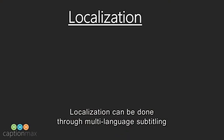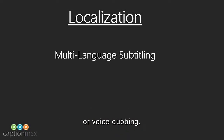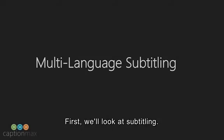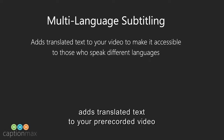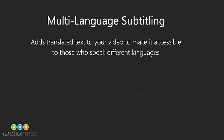Localization can be done through multi-language subtitling or voice dubbing. Let's take a look at a few examples of each. First, we'll look at subtitling. Multi-language subtitling adds translated text to your pre-recorded video to make it accessible to speakers of most any language in the world.